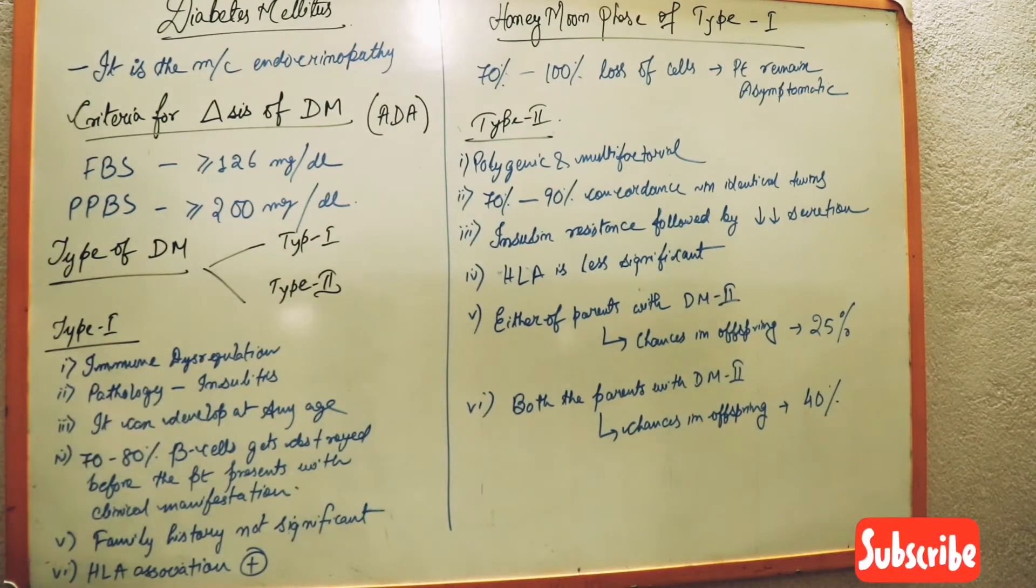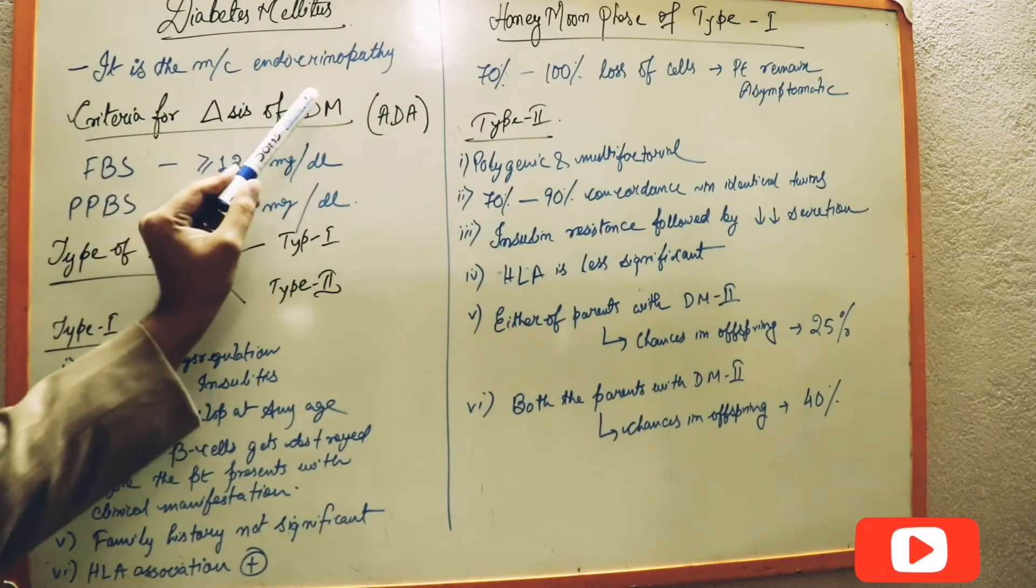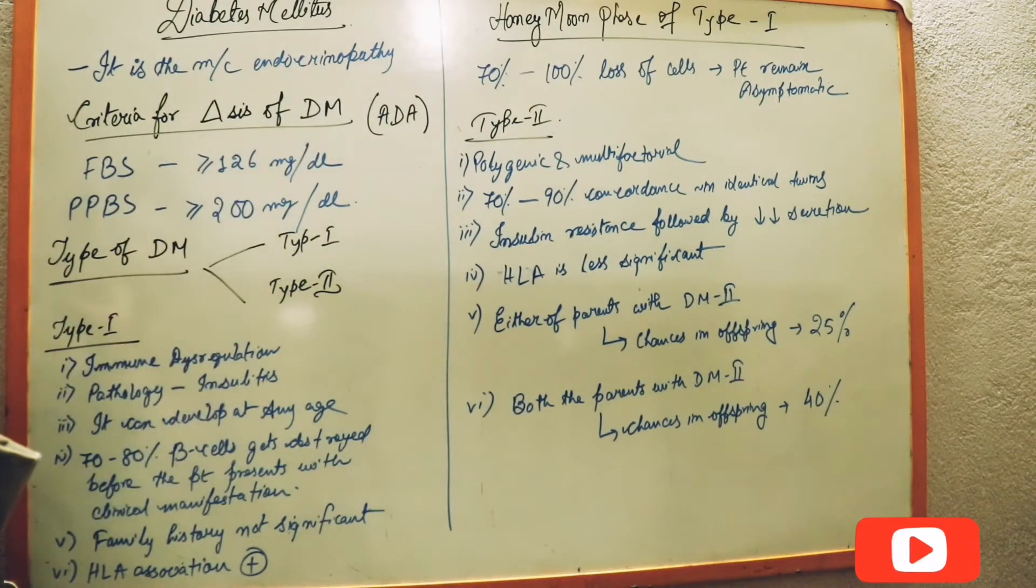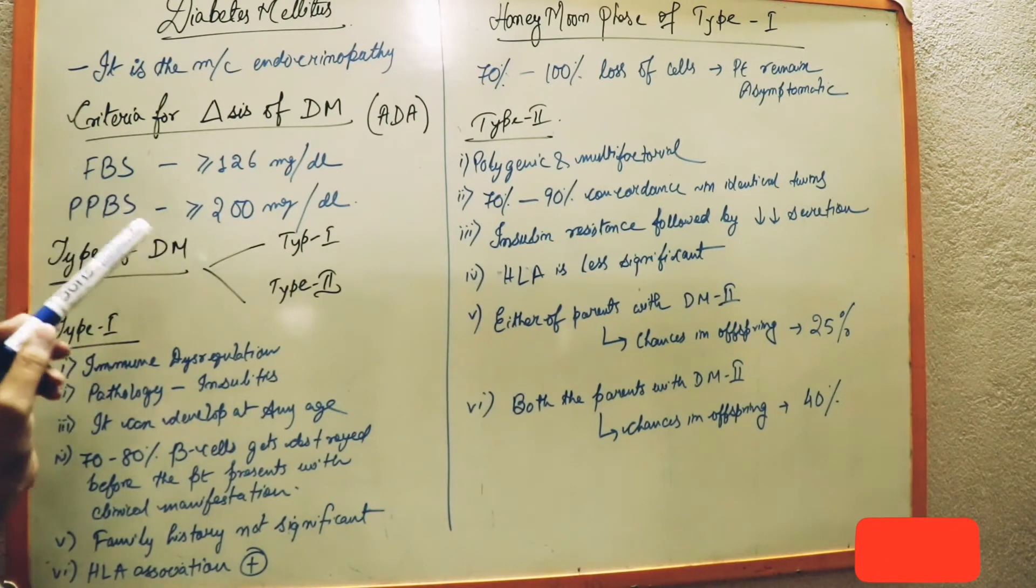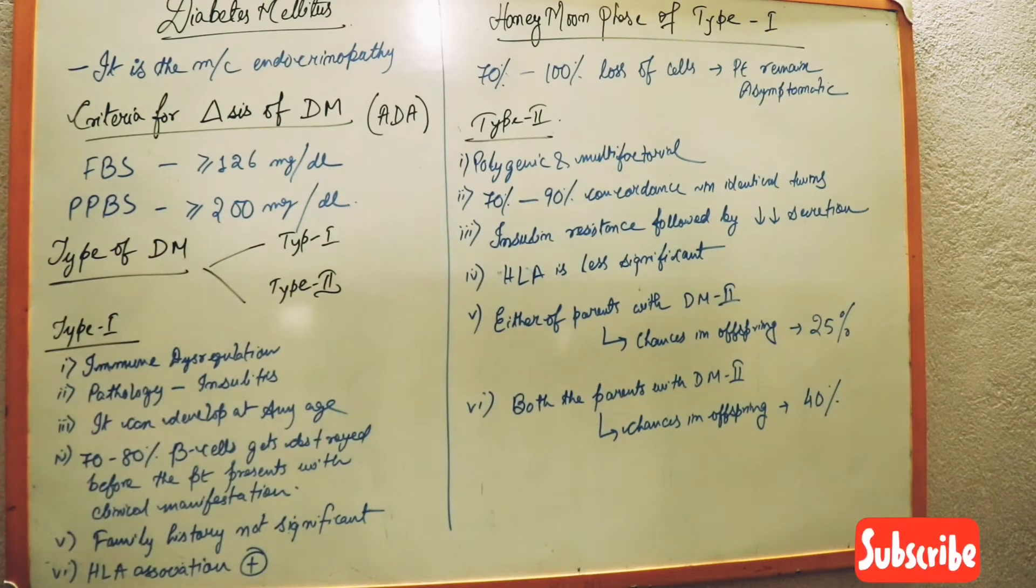So now let's start. Diabetes mellitus is the most common endocrine disorder. Criteria for diagnosis of diabetes mellitus: fasting blood sugar will be greater than or equal to 126 mg per deciliter and postprandial blood sugar will be greater than or equal to 200 mg per deciliter.